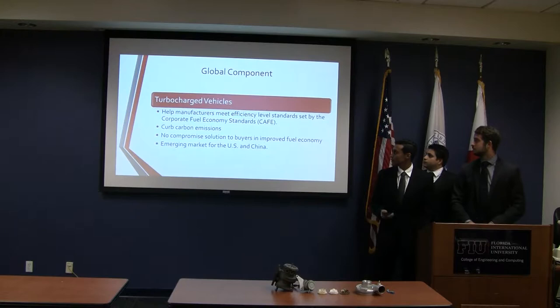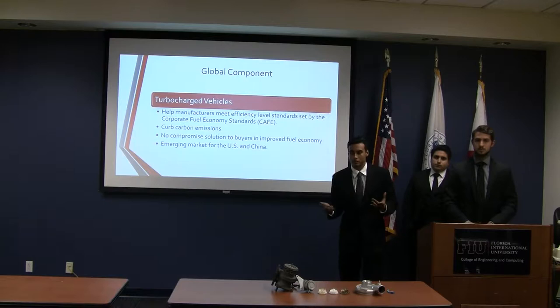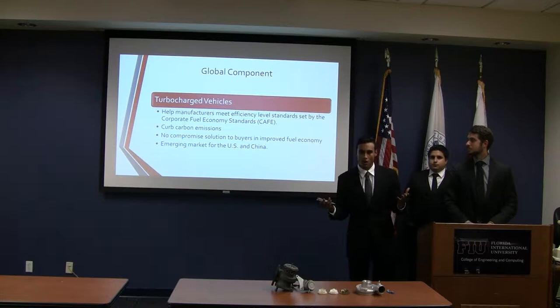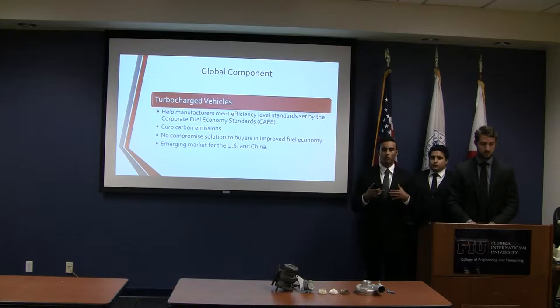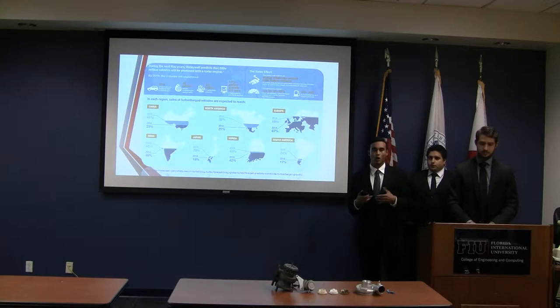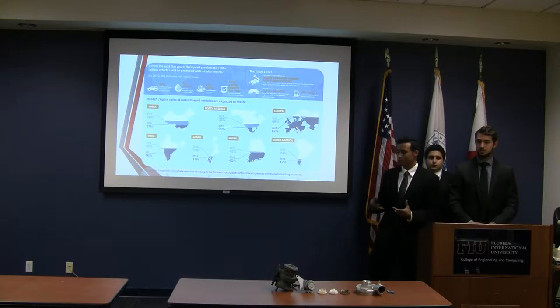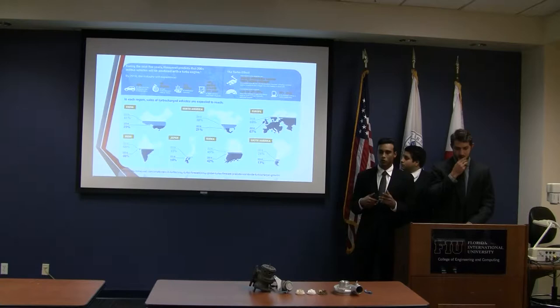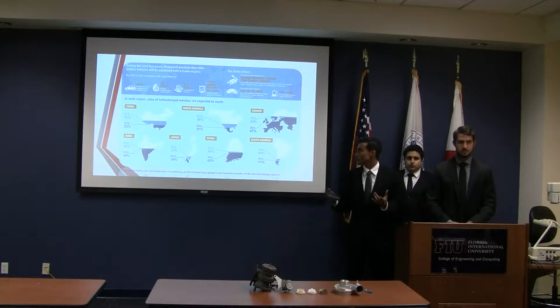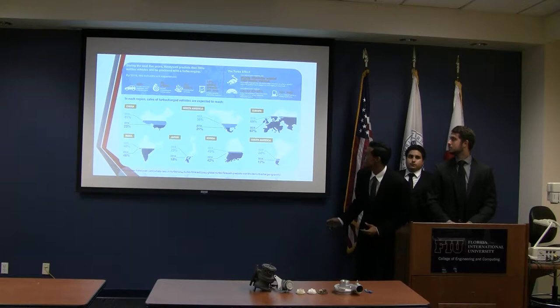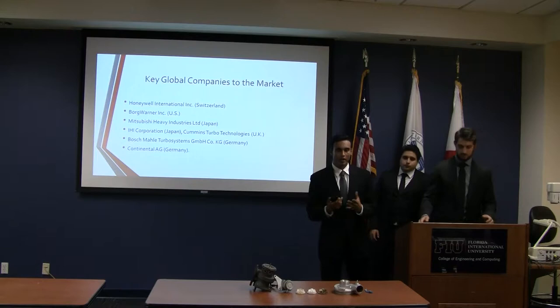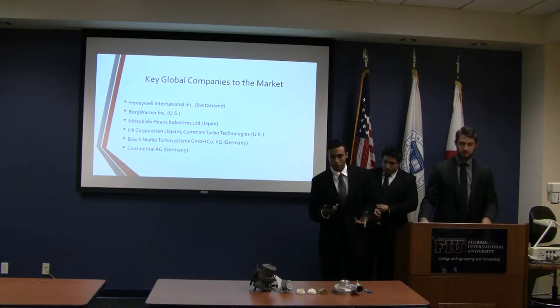The global component: turbochargers are being used more and more by manufacturers each year. They're trying to increase fuel economy by downsizing engines and adding turbochargers — so instead of a six-cylinder, you get a four-cylinder with a turbocharger. This is a very large emerging market for the United States and China. It offers a no-compromise solution with more performance and the same or higher fuel efficiency. Key global companies include Honeywell, BorgWarner, and Mitsubishi, which made our turbocharger.